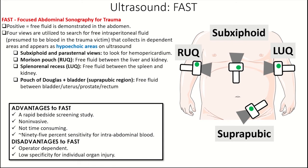Now we can talk about the FAST exam. FAST stands for Focused Abdominal Sonography for Trauma. It's called a positive FAST exam if there's free fluid demonstrated in the abdomen. We use four views to look for free intraperitoneal fluid — presumed to be blood in a trauma patient — that collects in dependent areas and appears as hypoechoic areas on ultrasound. In the sub-xiphoid and parasternal views, you're looking for hemopericardium. In Morrison's pouch in the right upper quadrant, you're looking for free fluid between the liver and kidney.